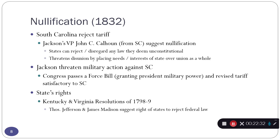Congress kind of finds a middle ground. On one hand, Congress passes what they call a force bill, which says the president has the right to use the army against South Carolina if he needs to. But at the same time Congress also passes a new tariff that gives South Carolina a way to save face — a slightly revised tax. Jackson makes it very clear that if South Carolina chooses not to abide by this new law, he's going to use force, and so South Carolina backs down.